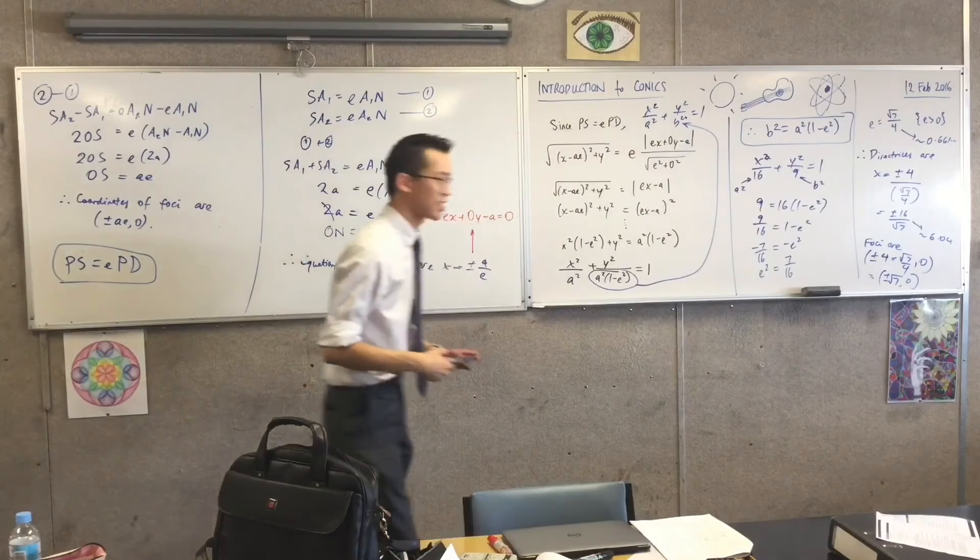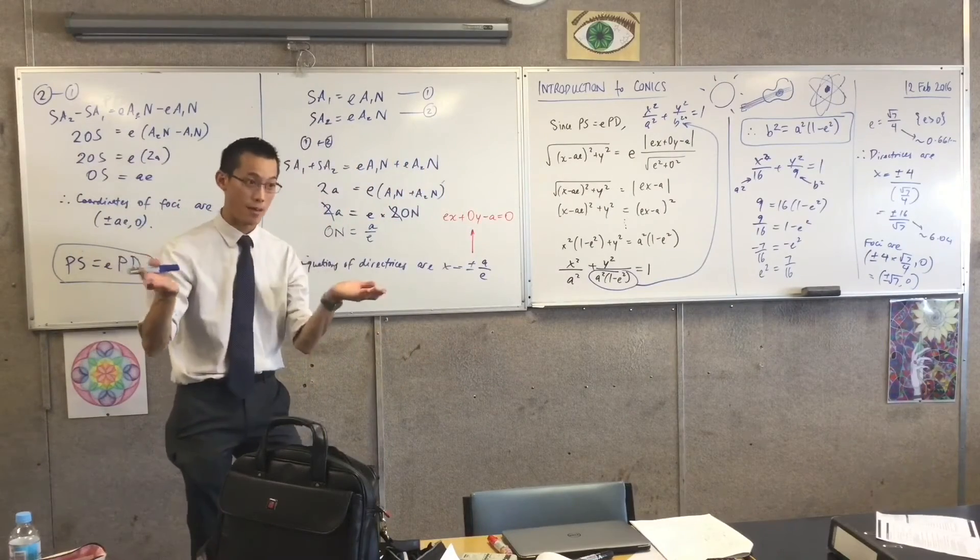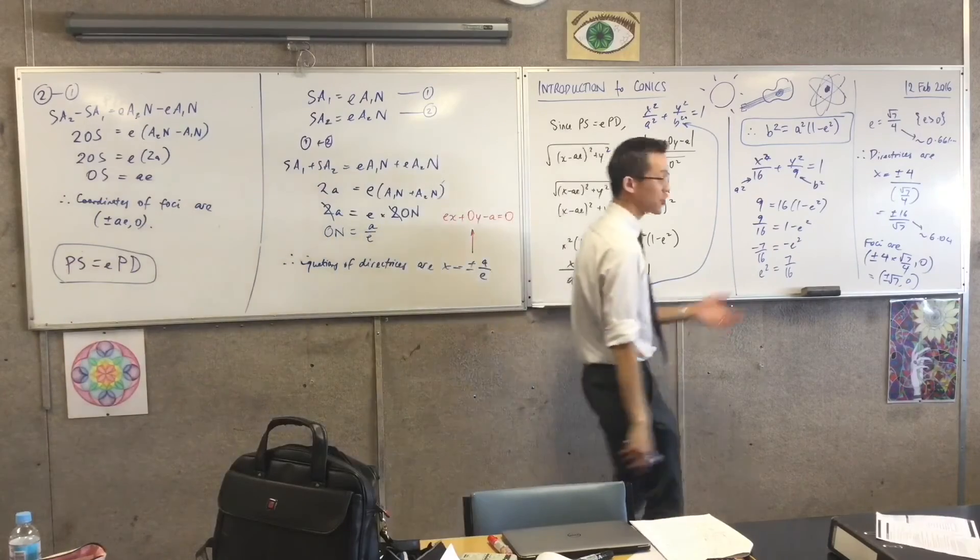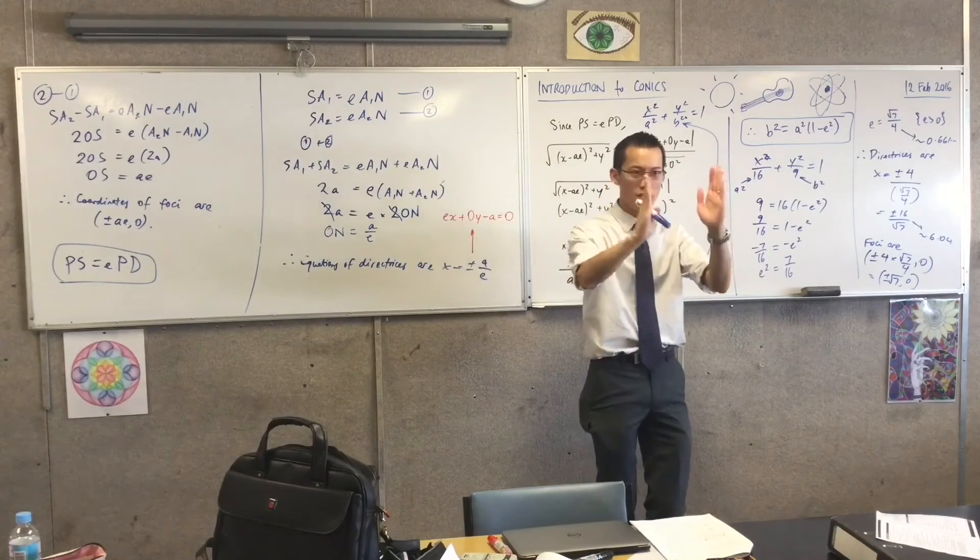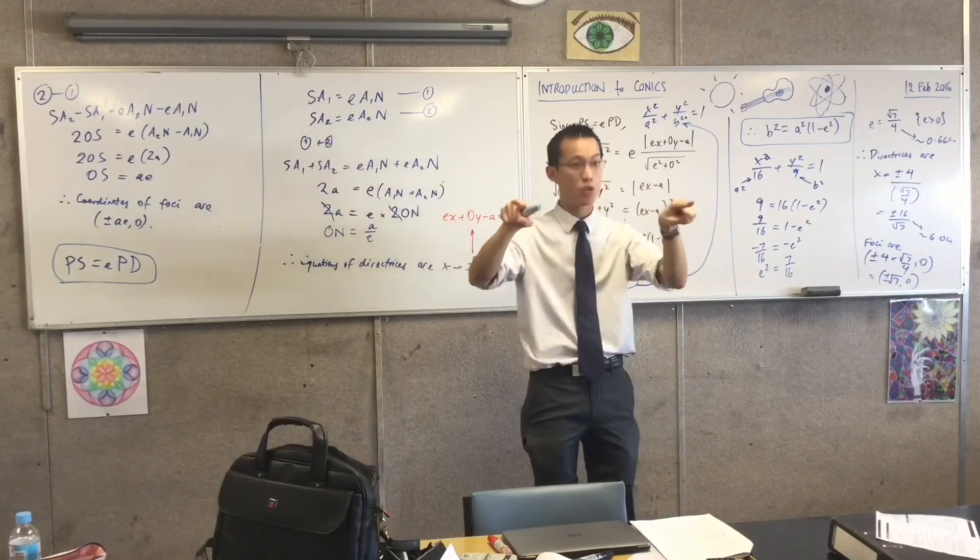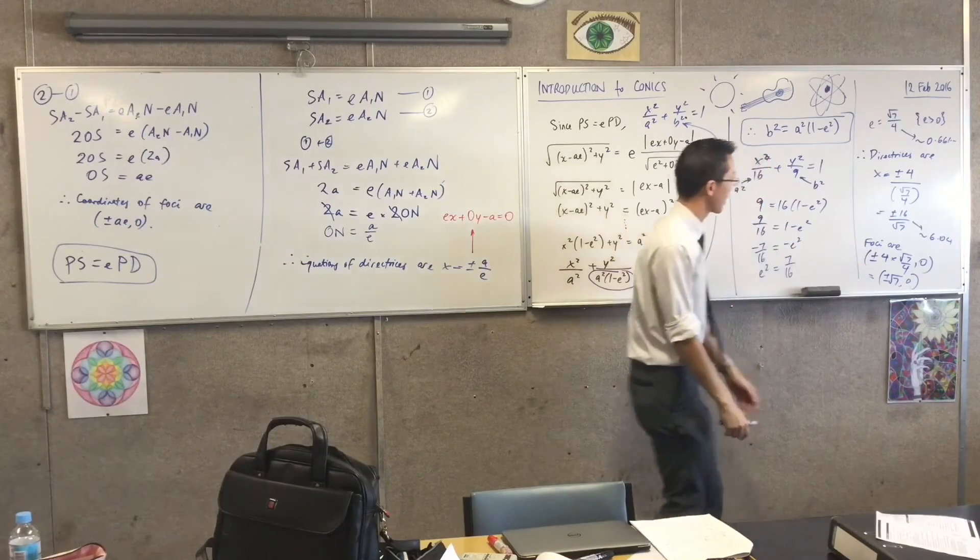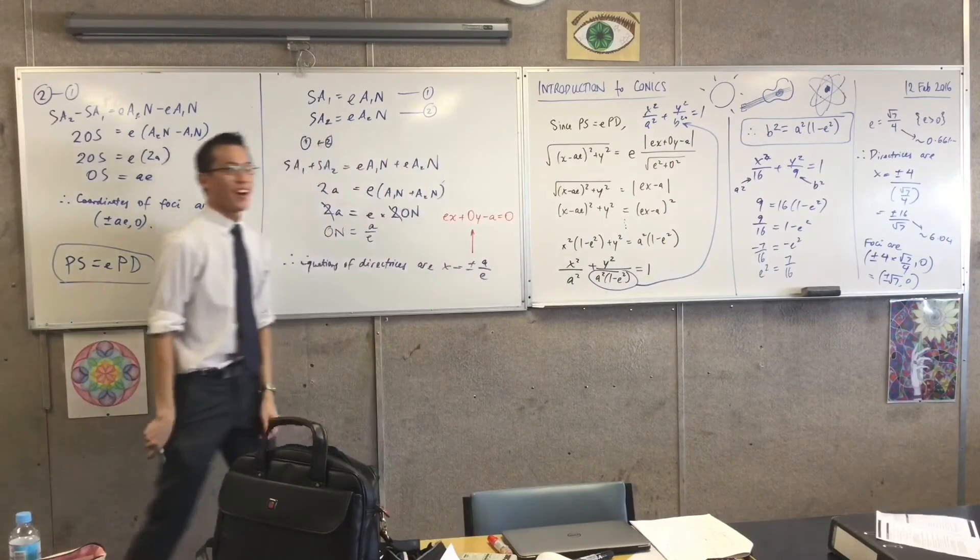Root 7, that's somewhere between root 4 and root 9, between 2 and 3. So it's like 2 point something-ish. Which is again, just do the check. Oh yeah, that's about there, on those two spots on the ellipse. That's where you expect your foci to be. Whew. Alright.